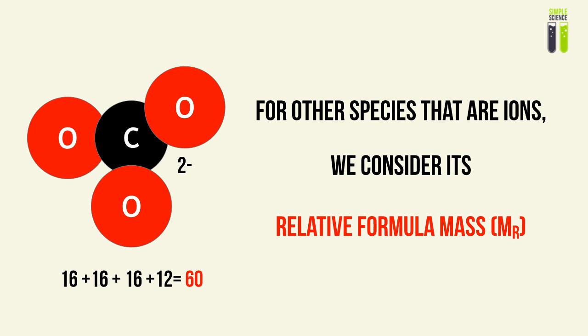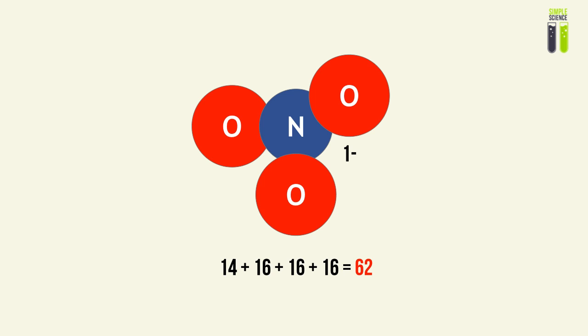For other species such as ions, we use the relative formula mass. The symbol Mr is exactly the same as the relative molecular mass. To find the relative formula mass, we just add up all the relative atomic masses of each species in that ion — for example, an ammonium ion. And that's pretty much it for relative molecular and atomic mass.